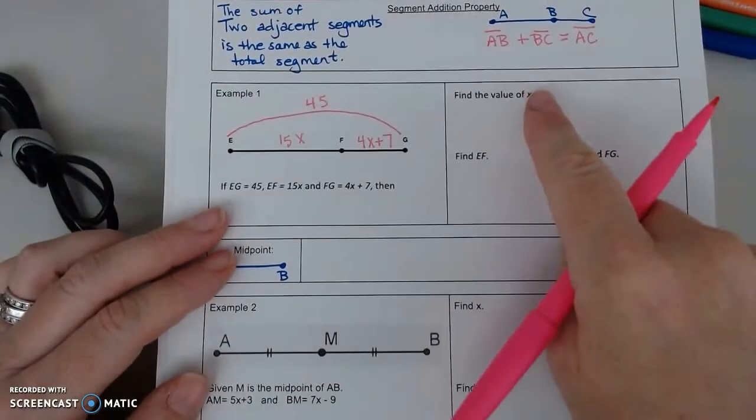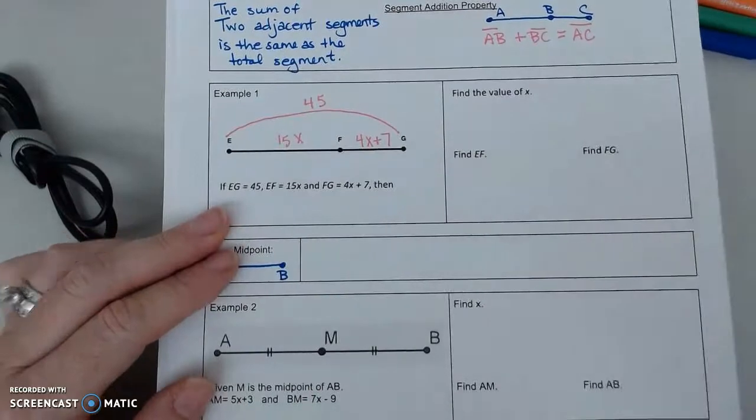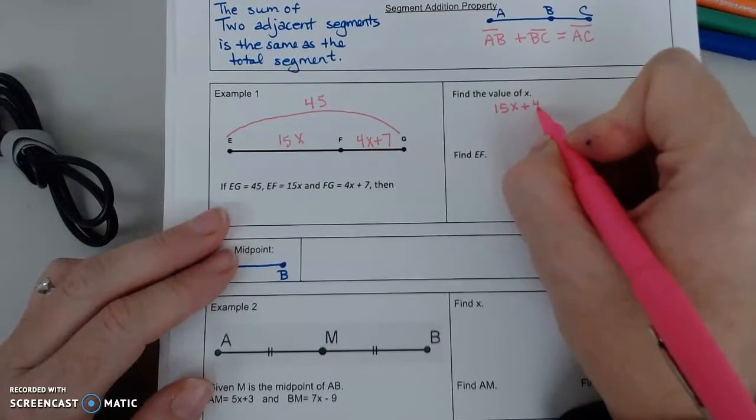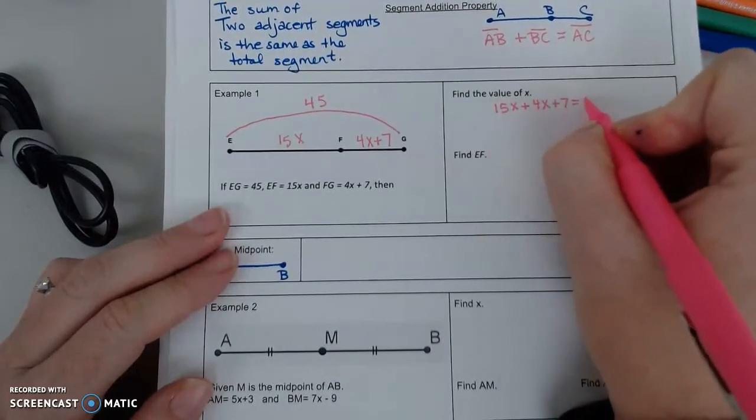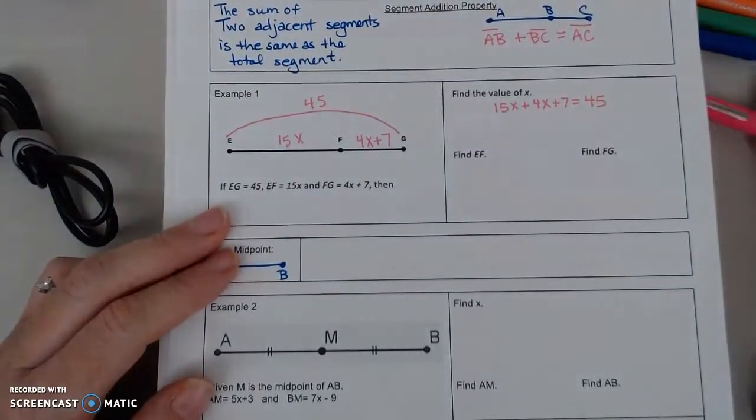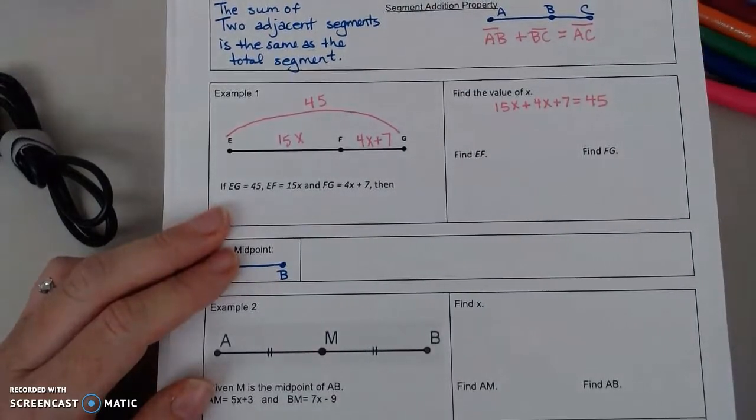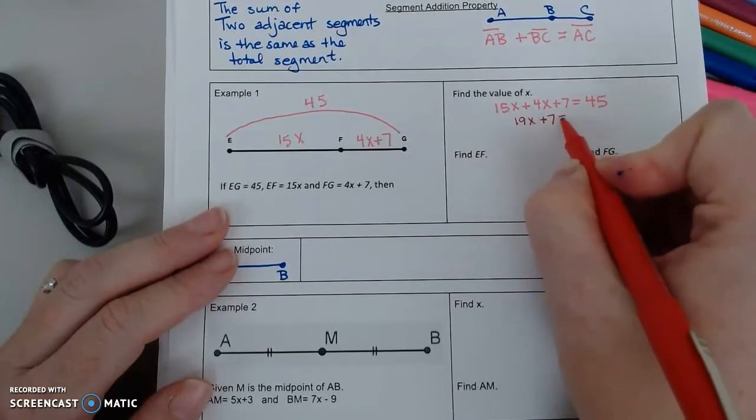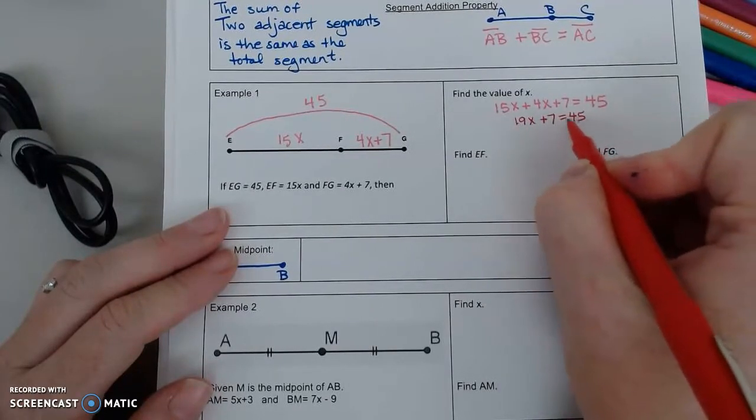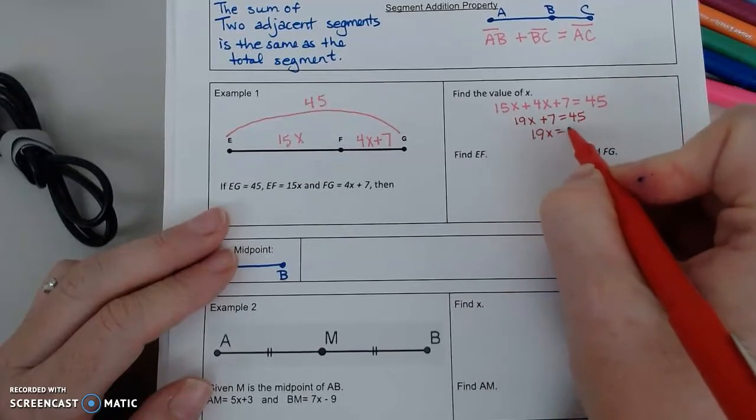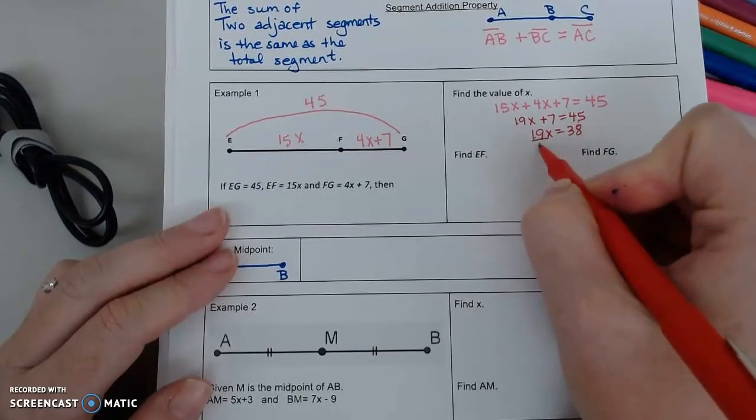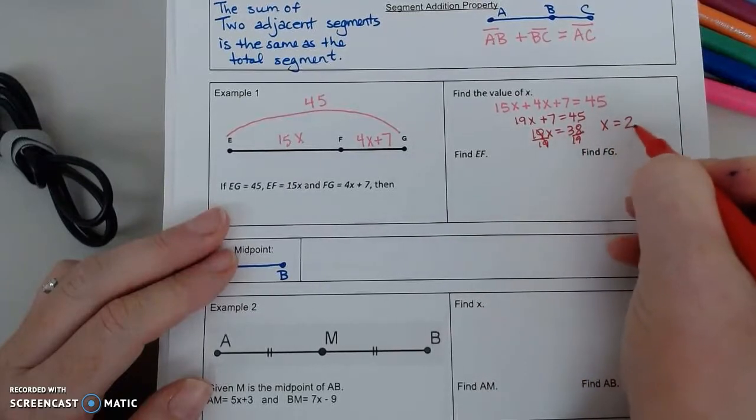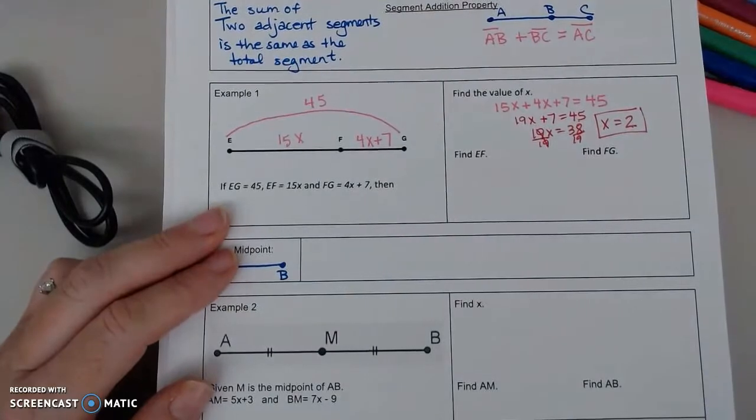So if we want to find X, I know there is a relationship. So I'm going to take 15X plus my other segment that's adjacent. And that will equal the total. So we want to see at least the equation on your paper so we know you understand the relationship. And then we want to solve. Combine like terms. I'm going to subtract 7. And divide by 19. So X equals 2. And that's what they wanted. So that question has been answered.